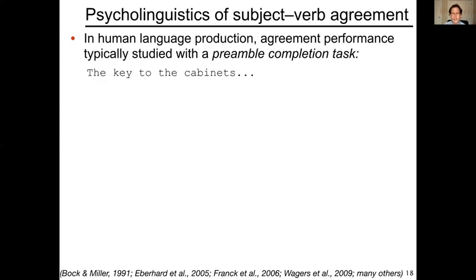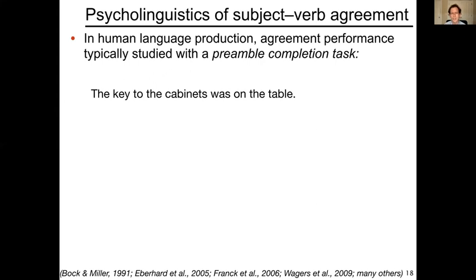So how is this studied in an experimental context? For the last 30 years there has been quite a lot of work on this. Agreement performance for humans is often studied with what's called a preamble completion task. An experimental participant is given the beginning of a sentence — for example, 'the key to the cabinets' — and then it is taken away from them. Their task is to redo the preamble, rewrite or re-speak it, and then complete the sentence.